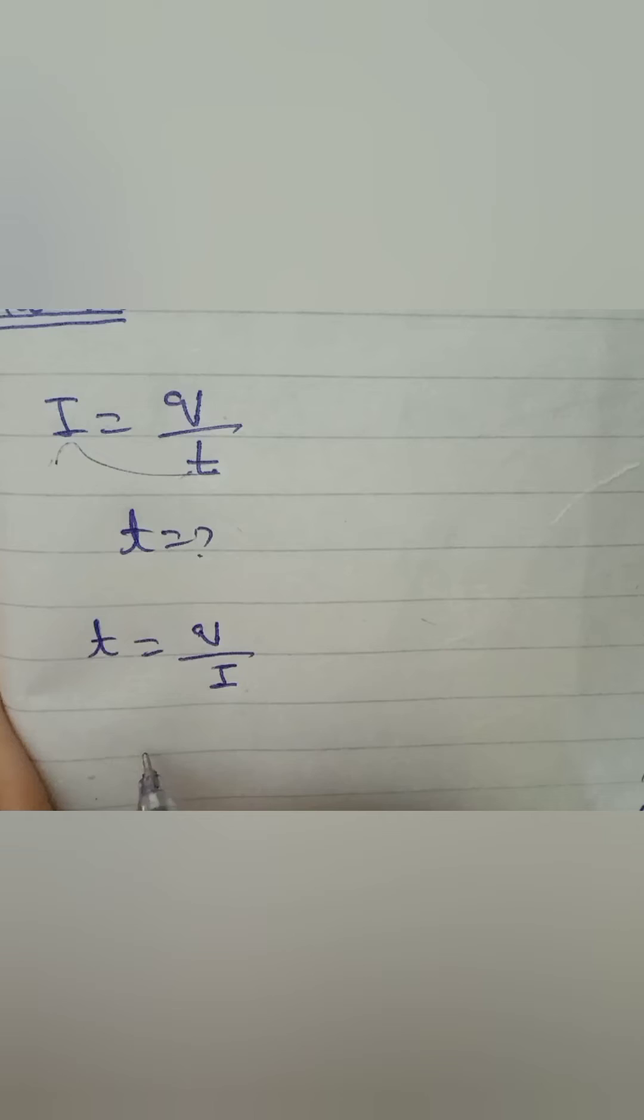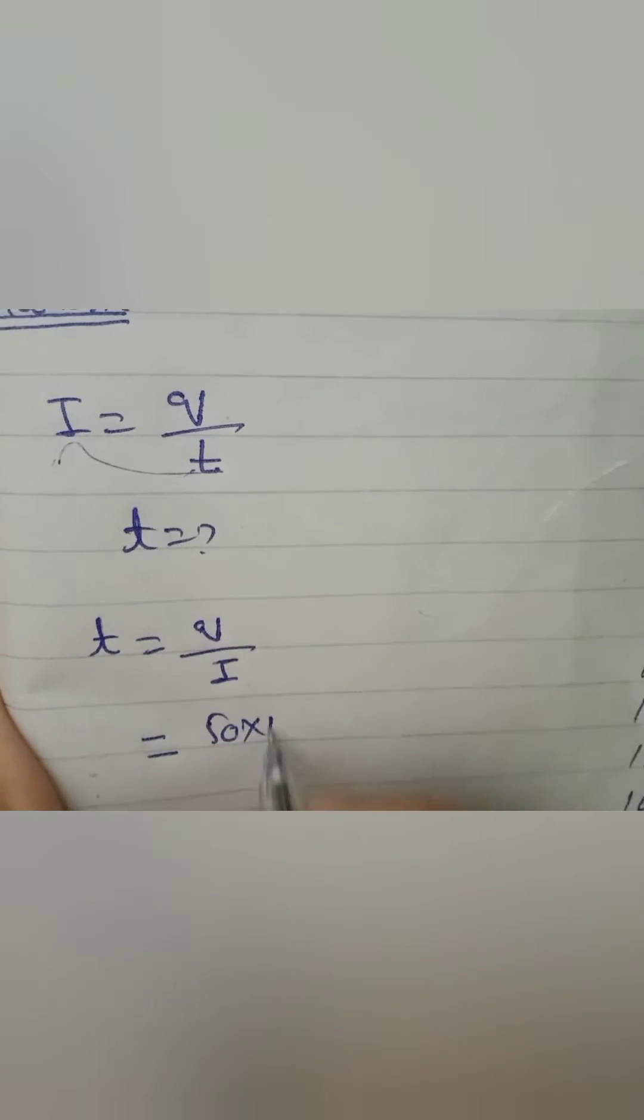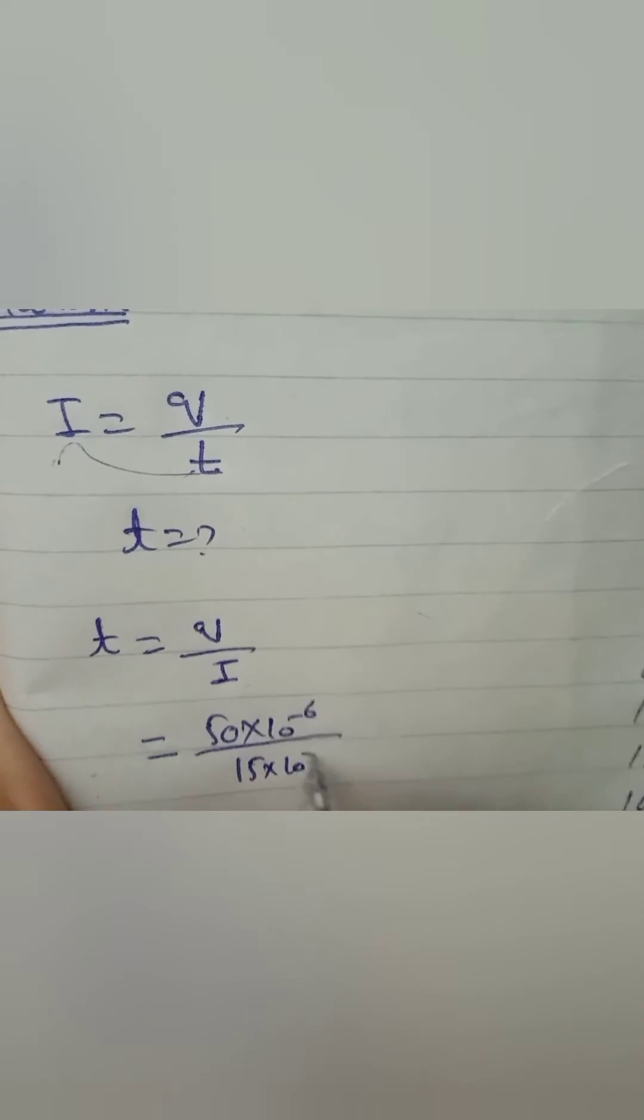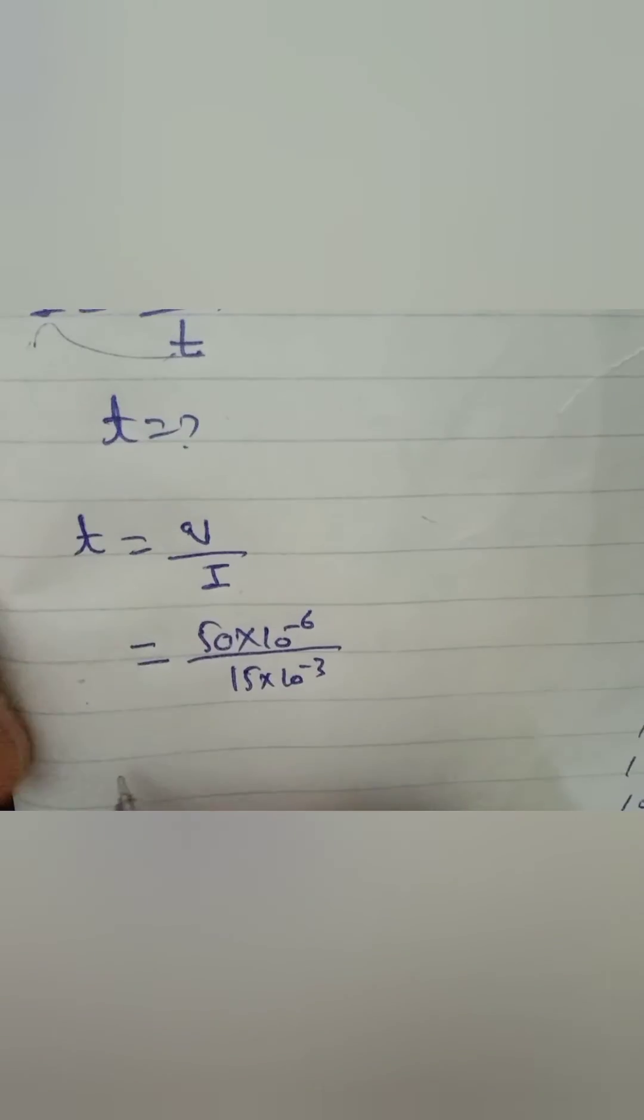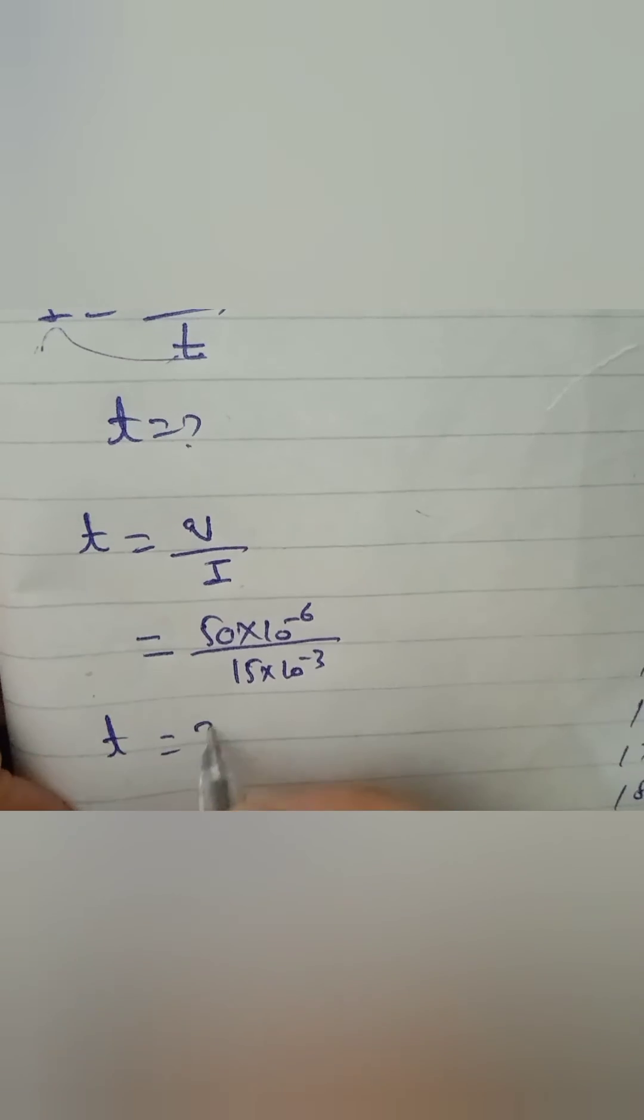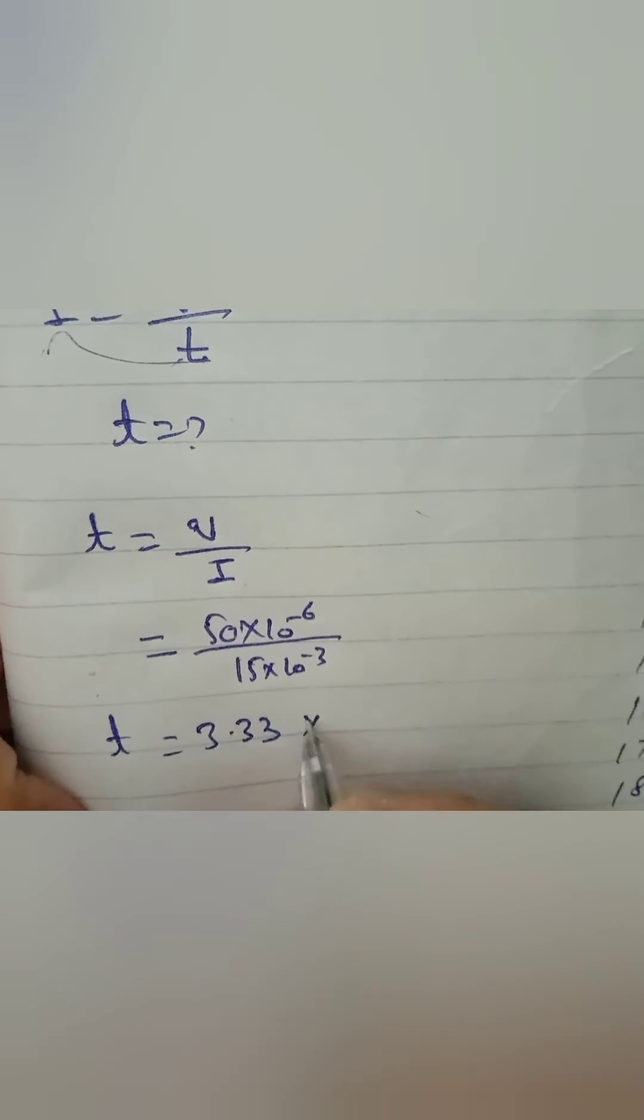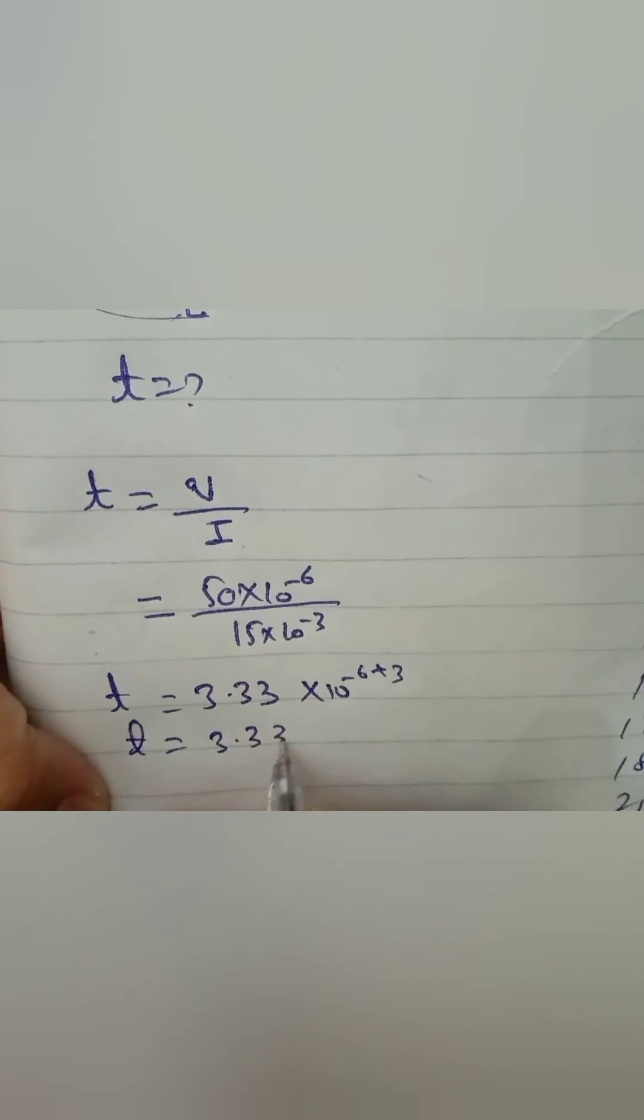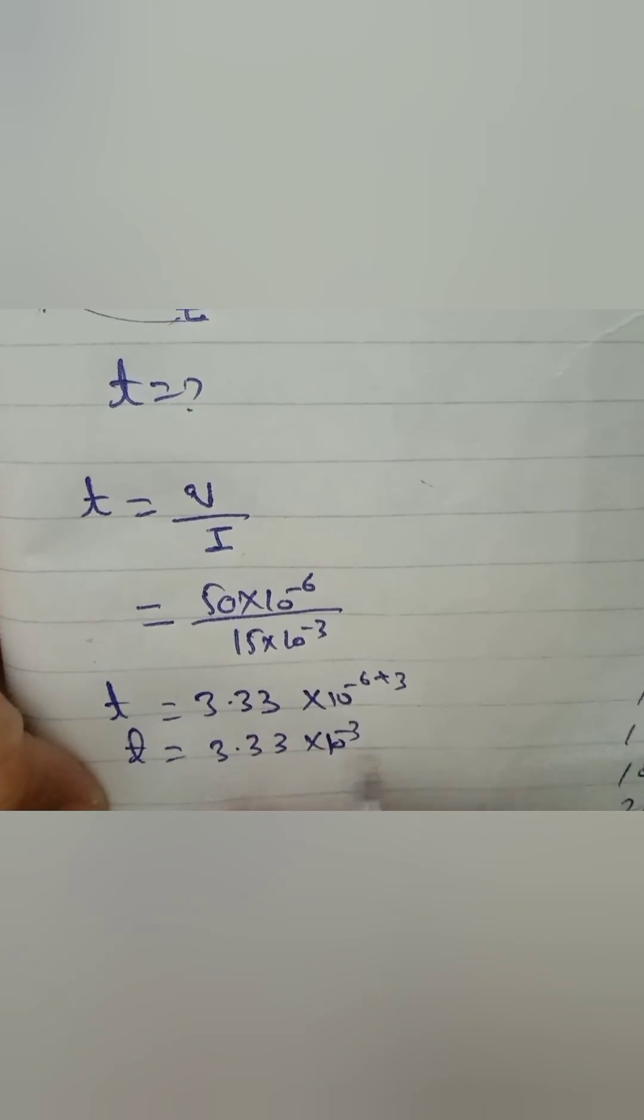Put in the values. Q is 50 micro. Current is 15 mA. 50 divided by 15 is 3.33. Now, 10 to the power minus 6 plus 3 is 10 to the power minus 3.